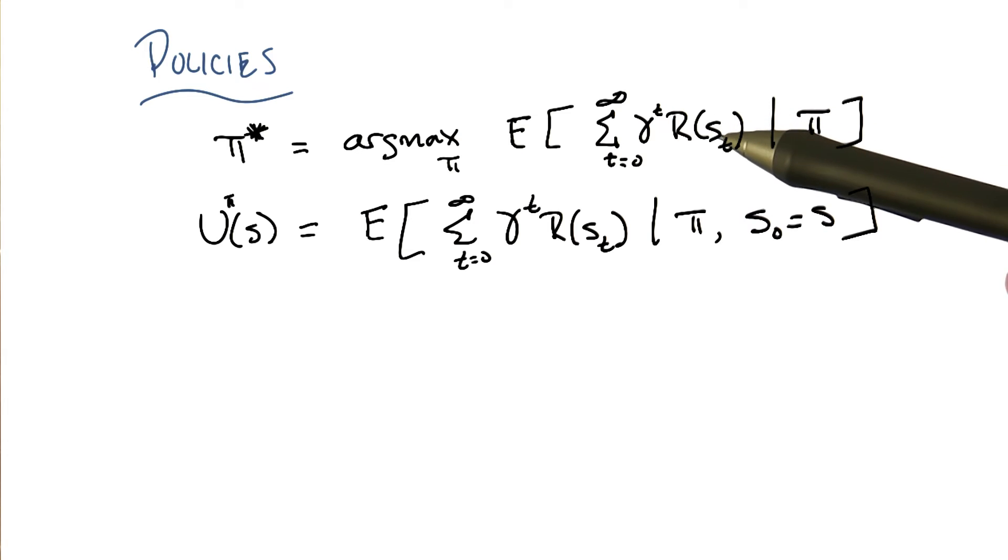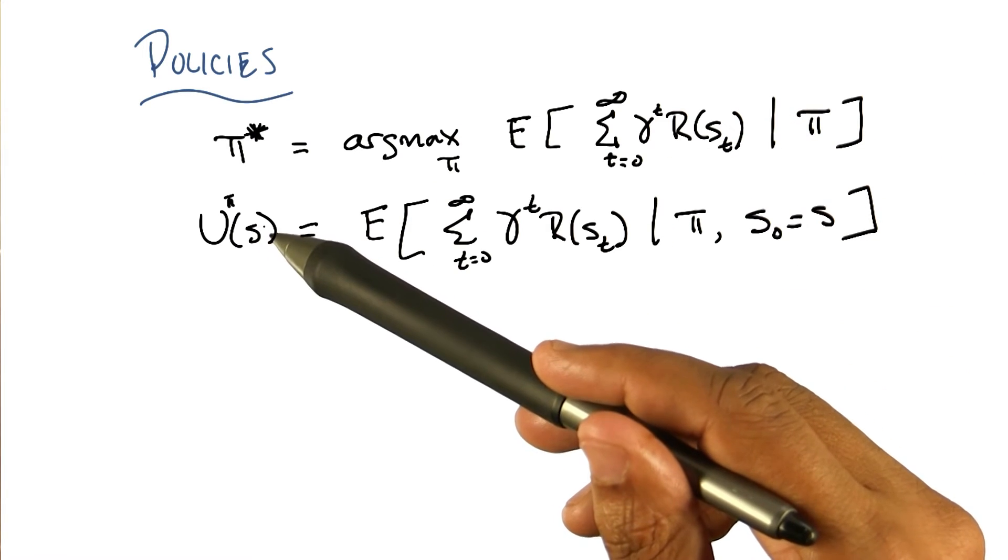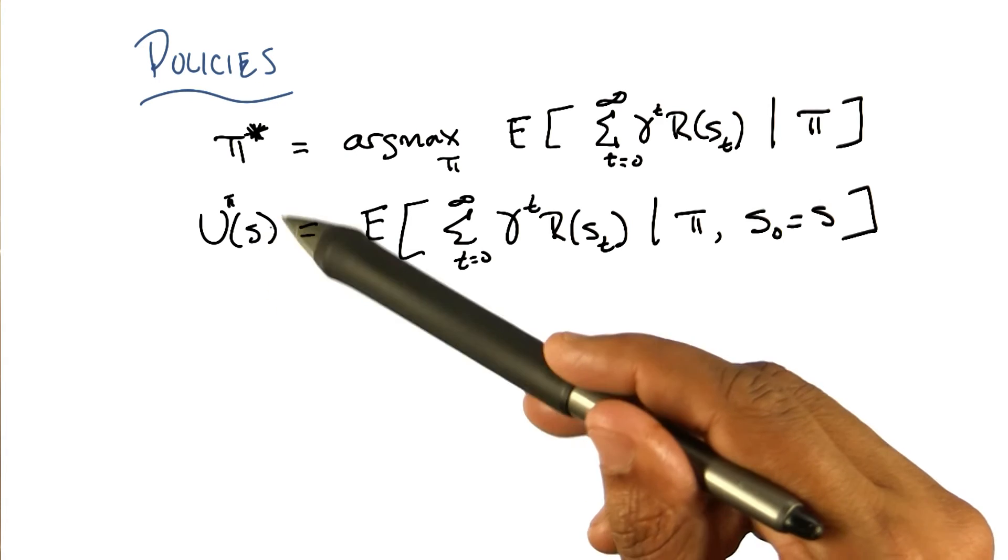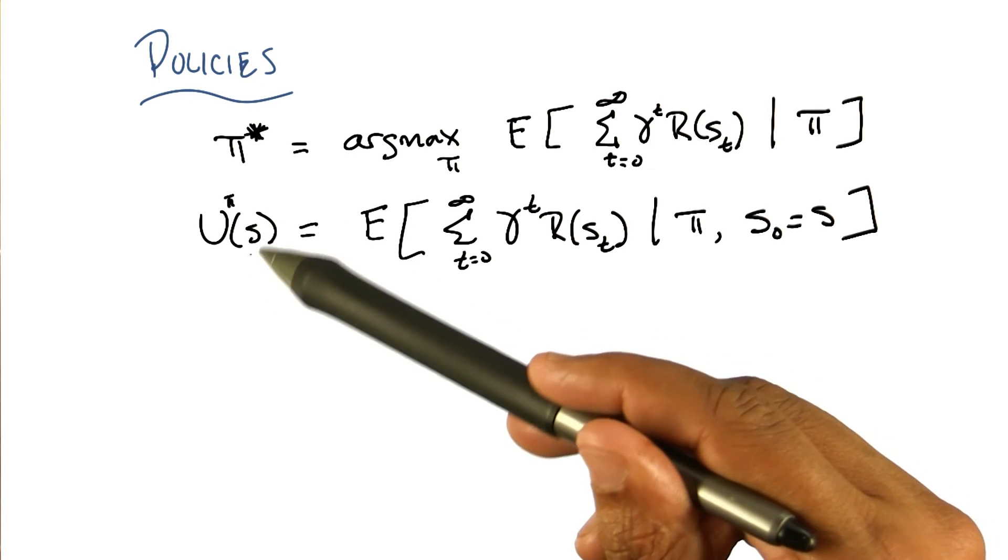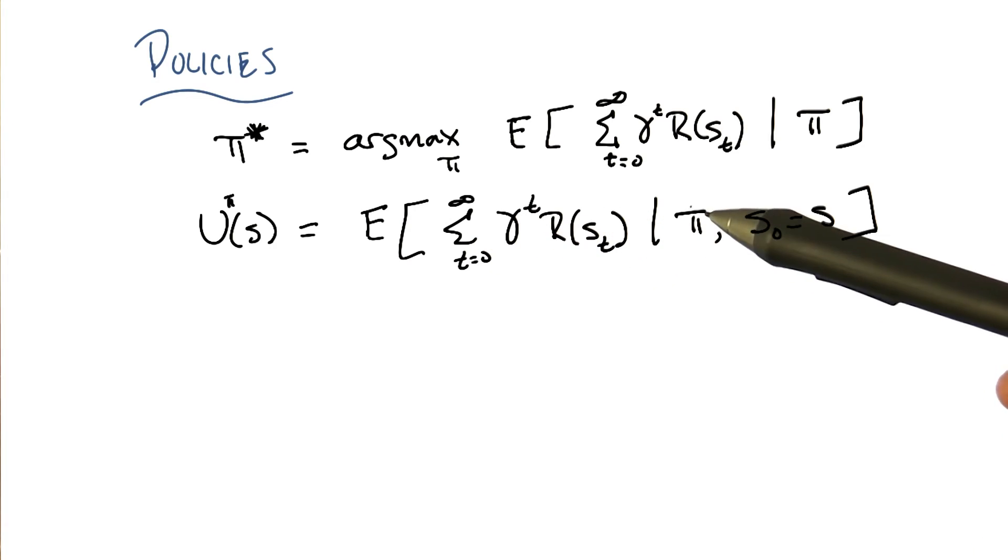So, this answers the question you asked me before about, well, what's S0? Well, we talk about that in terms of the utility of a state. So, how good is it to be in some state? Well, it's exactly as good to be in that state as what we will expect to see from that point on, given that we're following a specific policy where we started in that state. Does that make sense? Okay. Yeah.